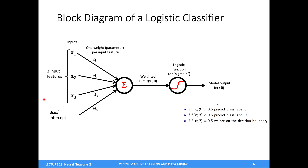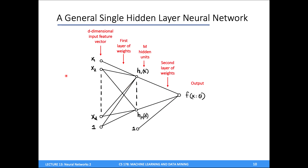The first thing to review is this block diagram for a logistic model. A logistic classifier is a weighted linear combination of features — you multiply weights times features and add them up. After doing this weighted linear combination, you apply a nonlinear function, the sigmoid function, to get the model output. In general, a neural network takes this kind of block diagram computational structure and stacks it on itself in order to get a more complex model.